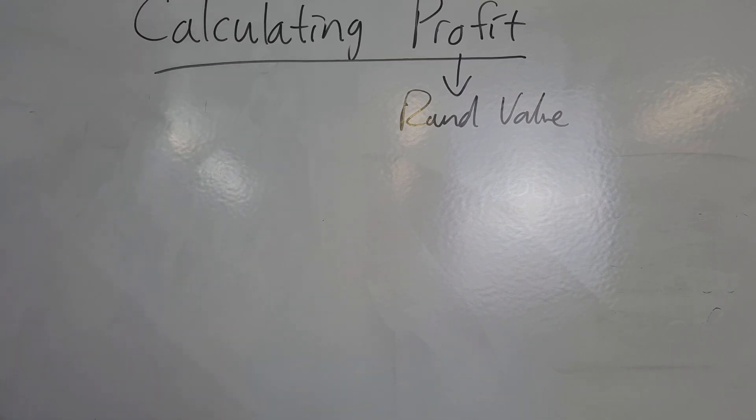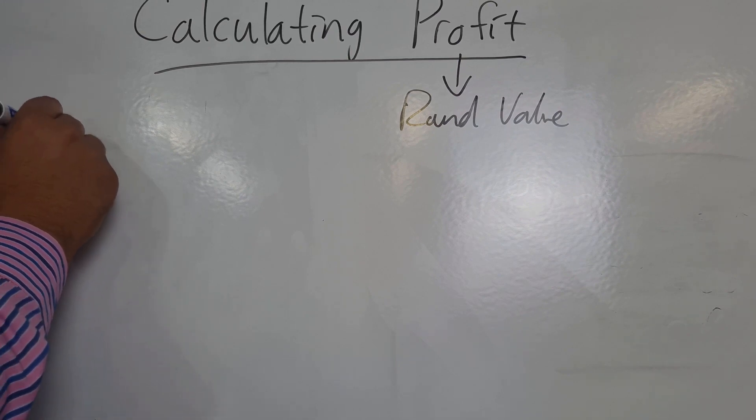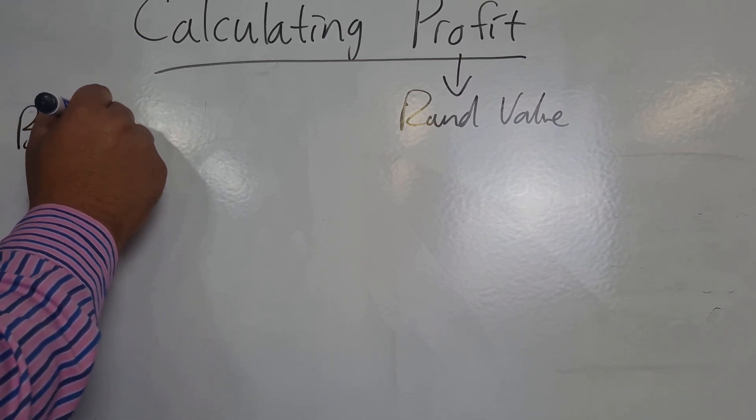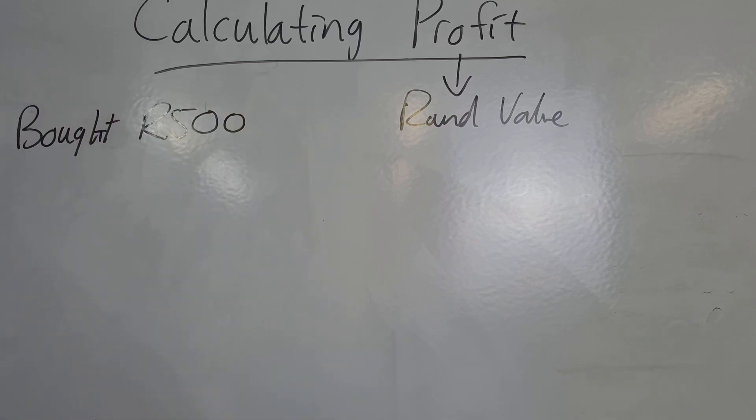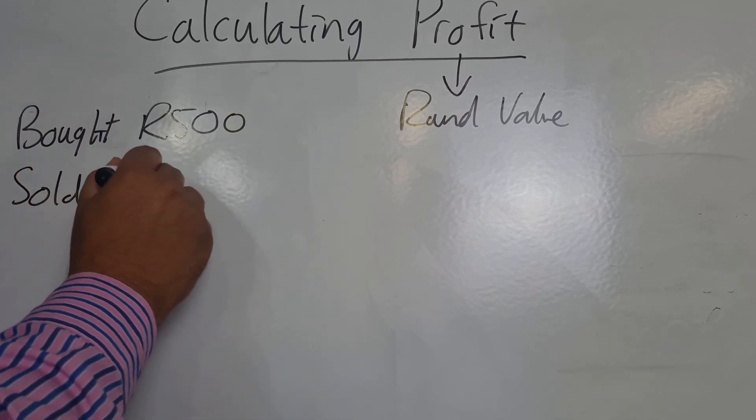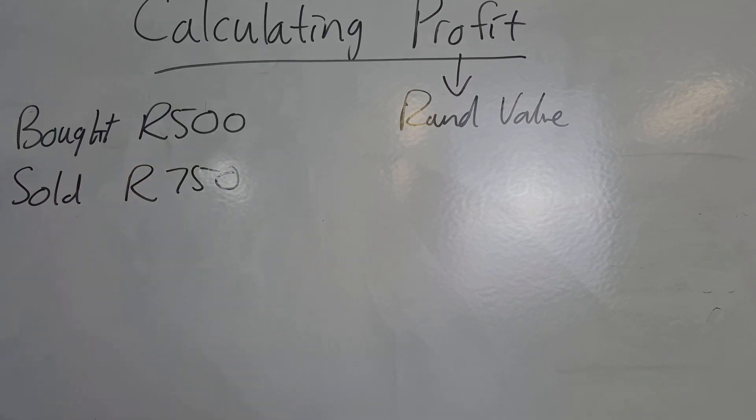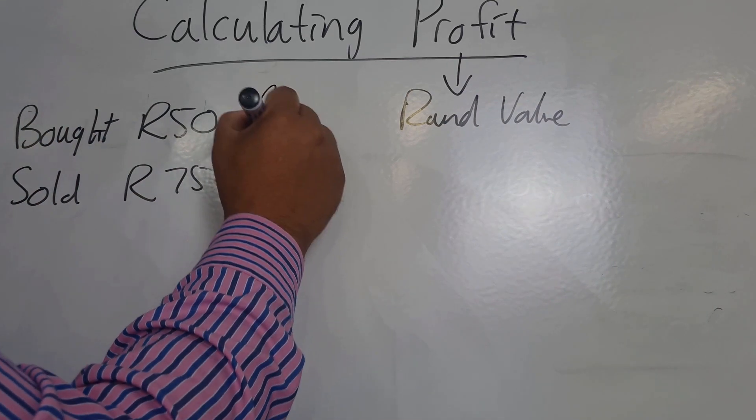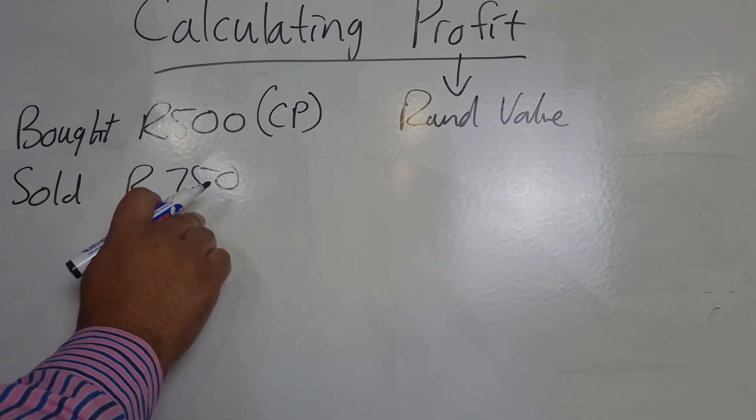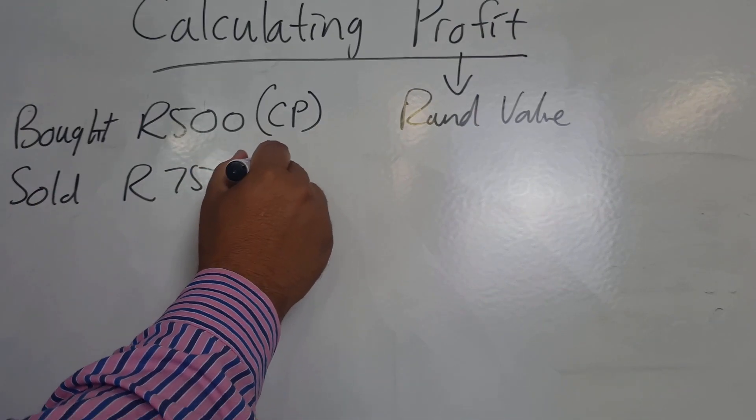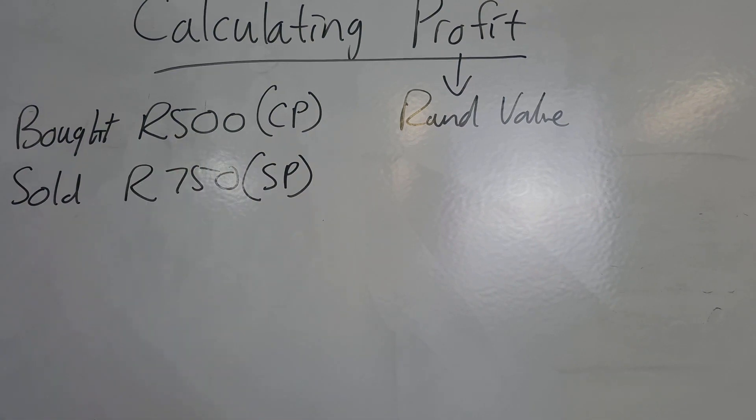So let's take a typical example. Let's say I bought a product to the value of 500 rand, I then sold that product for 750 rand. So I've got a product bought it, in other words this is what we would call my cost price, sold for 750, this would be what we call our selling price.